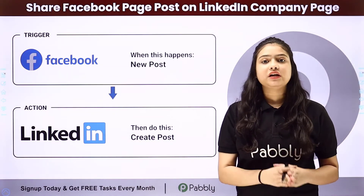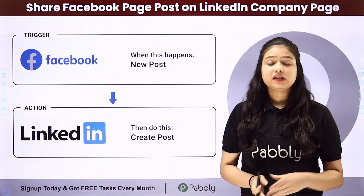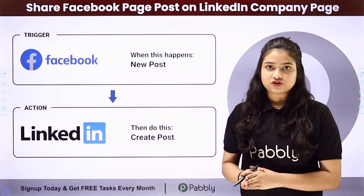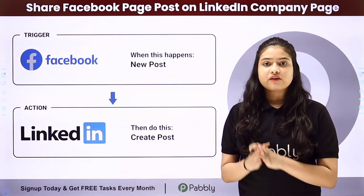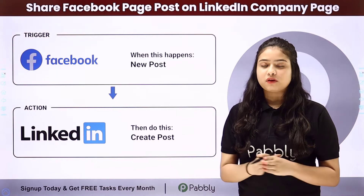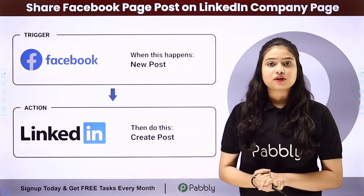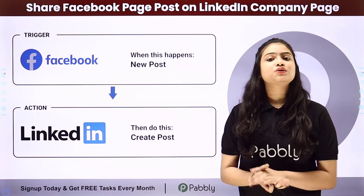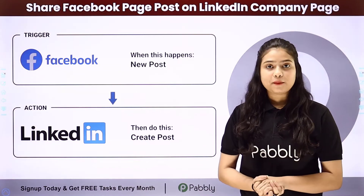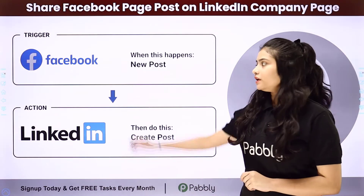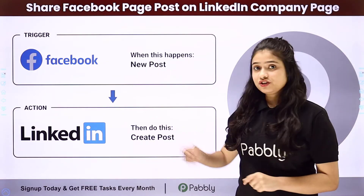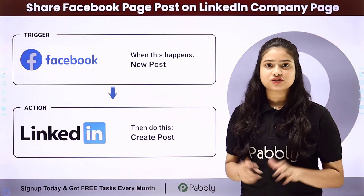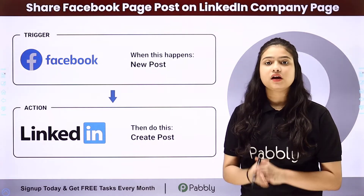Suppose I have an event management company and to promote my business I am also running a Facebook page. Now I want that as soon as I post something on my Facebook page, the same post should also be shared on my LinkedIn company page. So how are we going to automate this entire process? We will integrate both applications using the amazing automation and integration software Pabbly Connect.